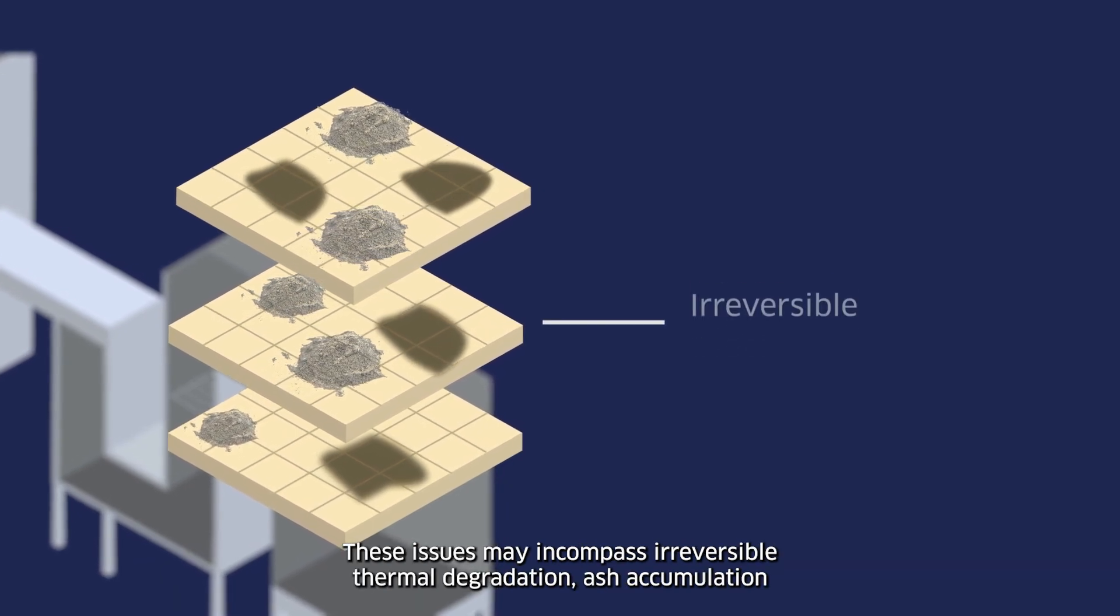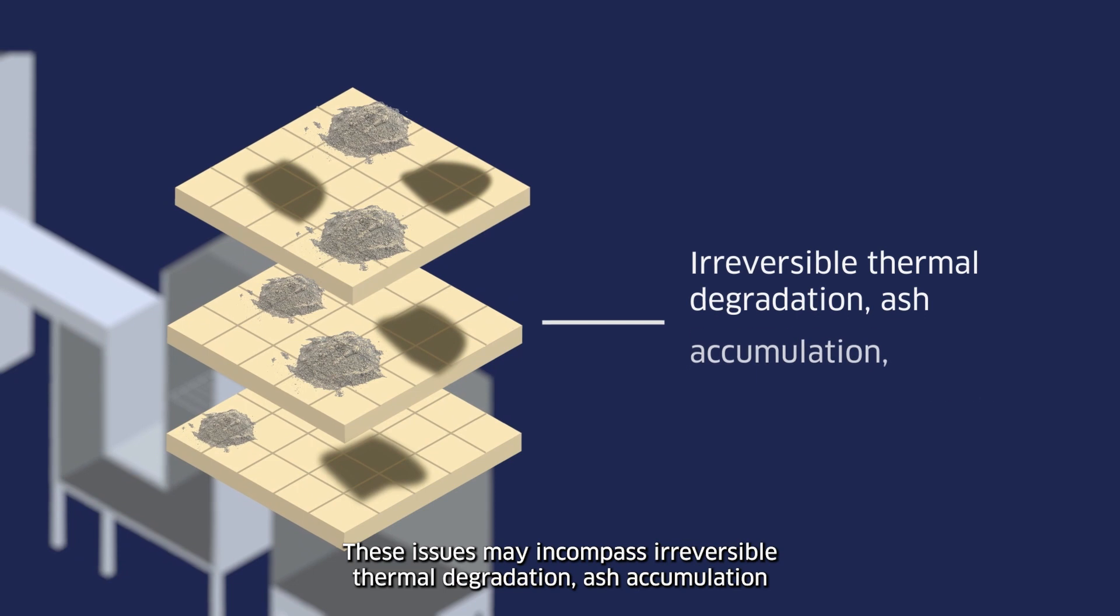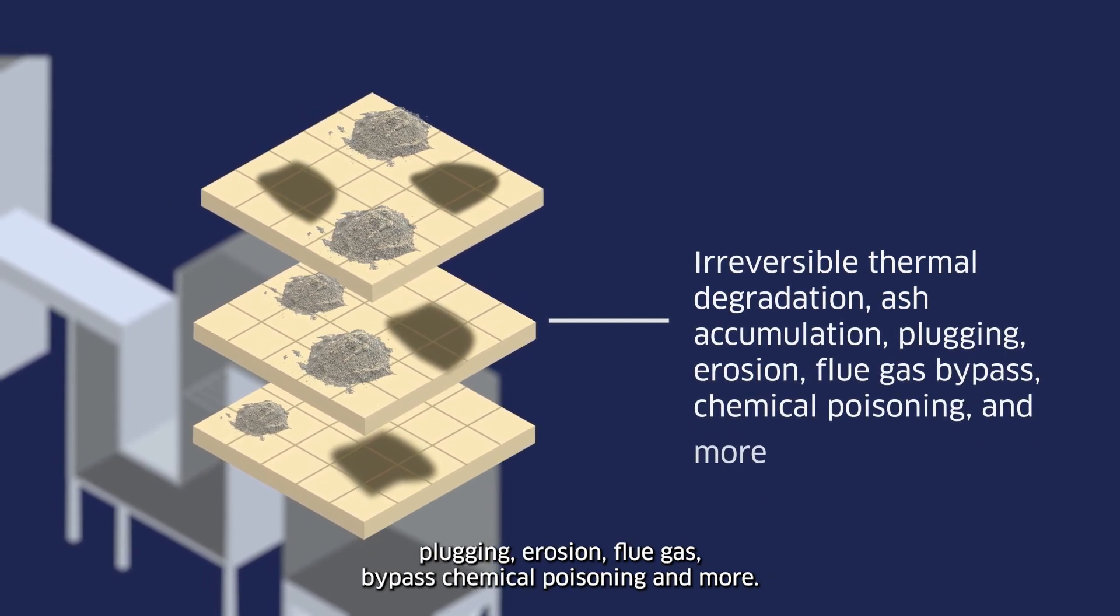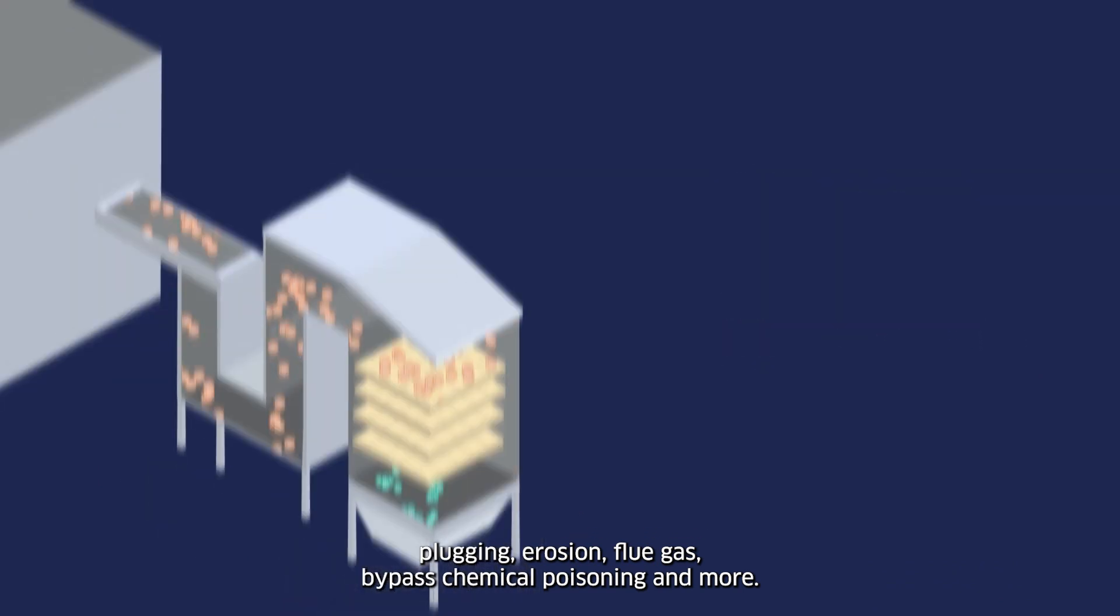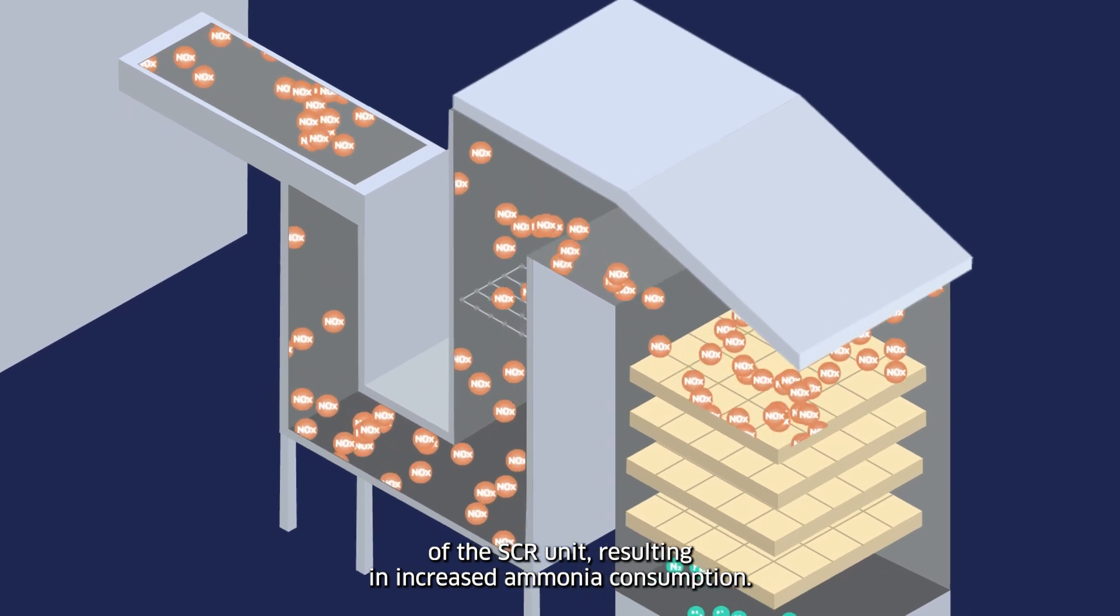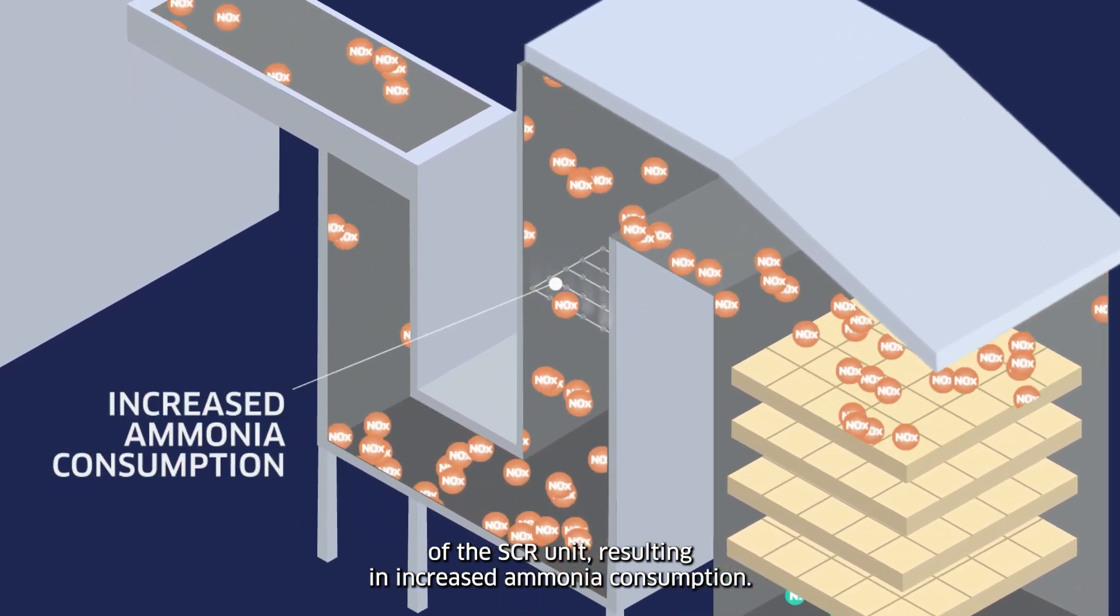These issues may encompass irreversible thermal degradation, ash accumulation, plugging, erosion, flue gas bypass, chemical poisoning and more. These problems directly affect the performance and overall condition of the SCR unit, resulting in increased ammonia consumption.